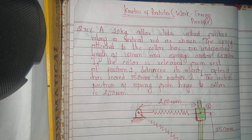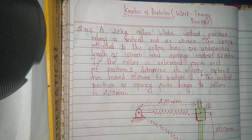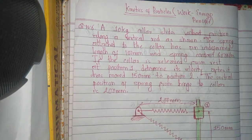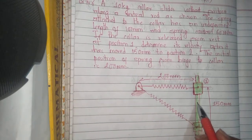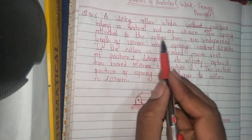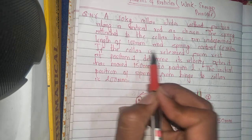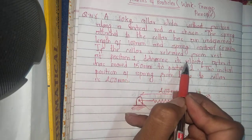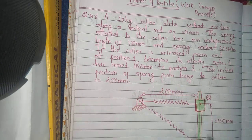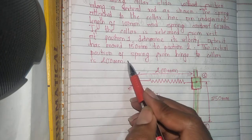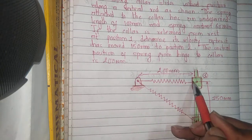Hello everyone, today we are going to solve problem number six of kinetics of particle: work energy principle. A 10 kg collar slides without friction along a vertical rod. The spring attached to the collar has a natural length of 100 millimeters and spring constant 600 Newton per meter. The initial position of the spring from the hinge to the collar is 200 millimeters.